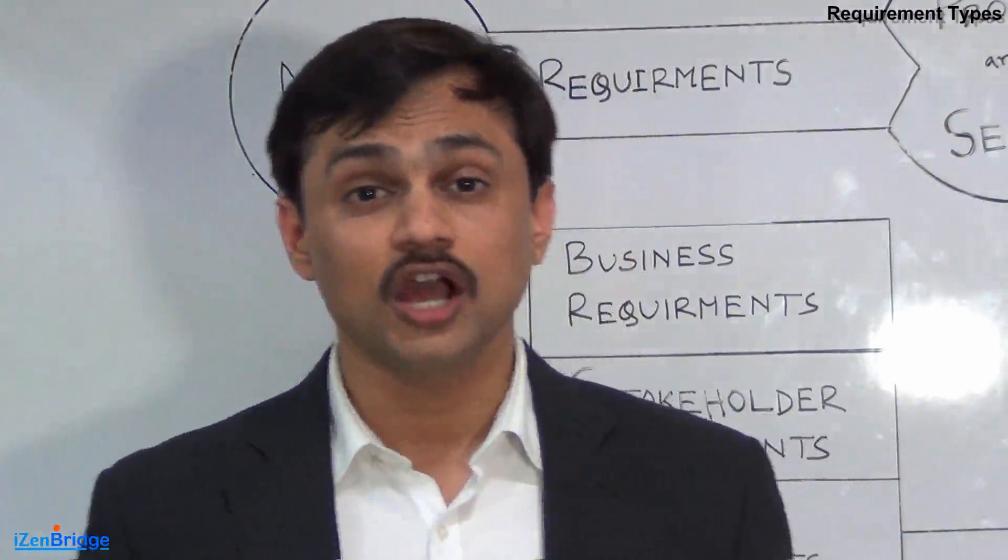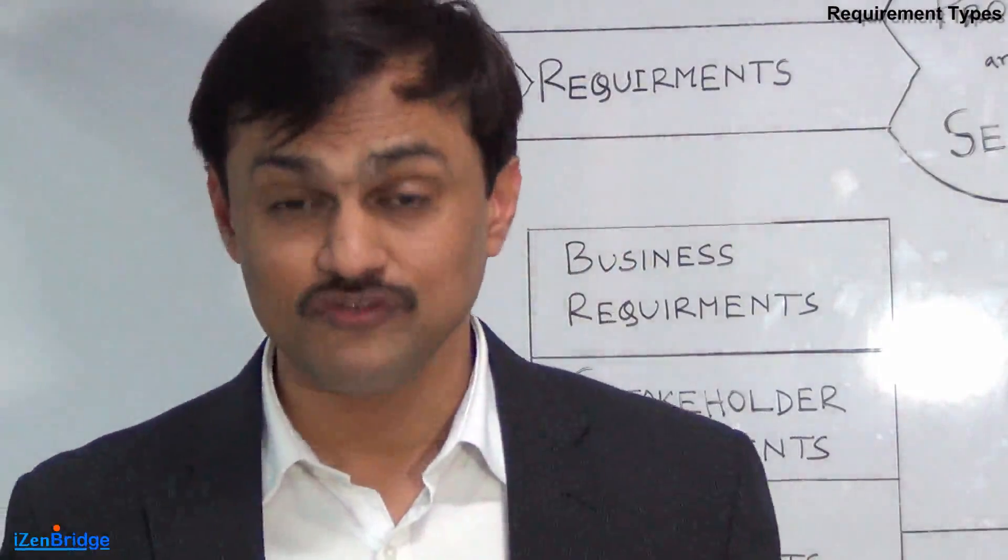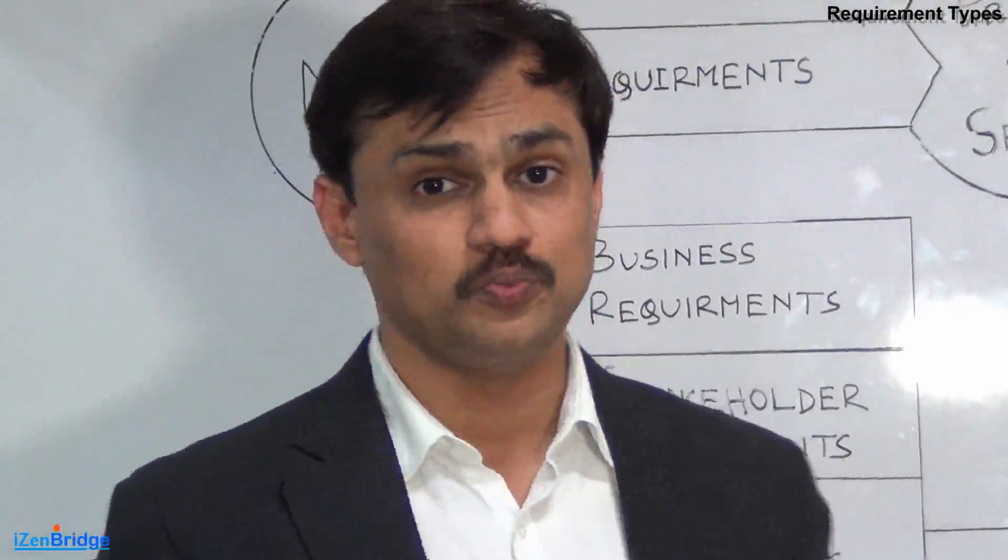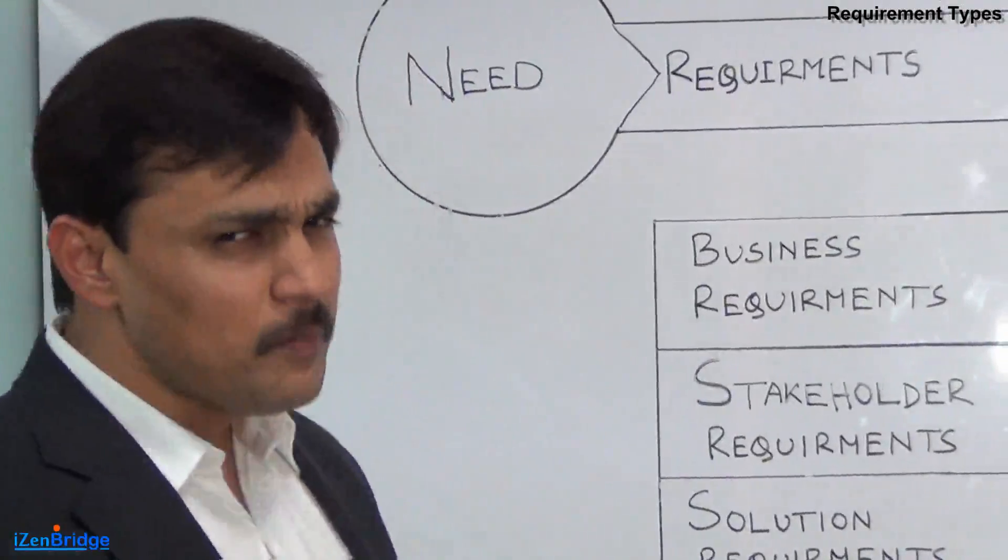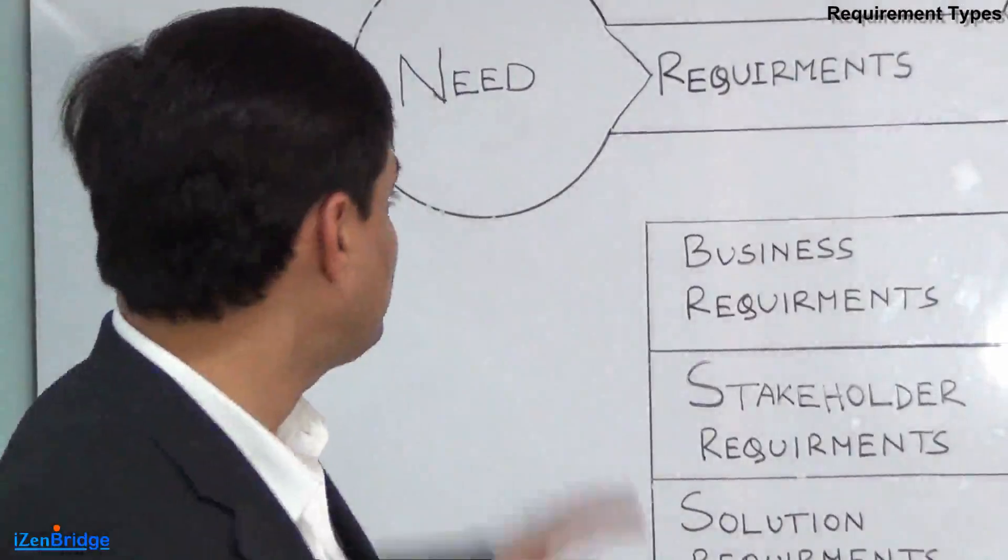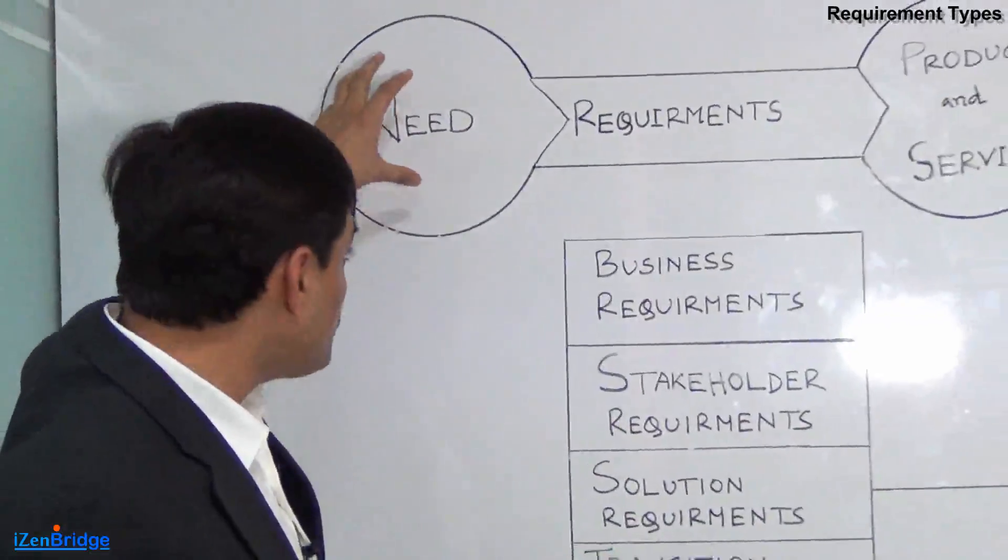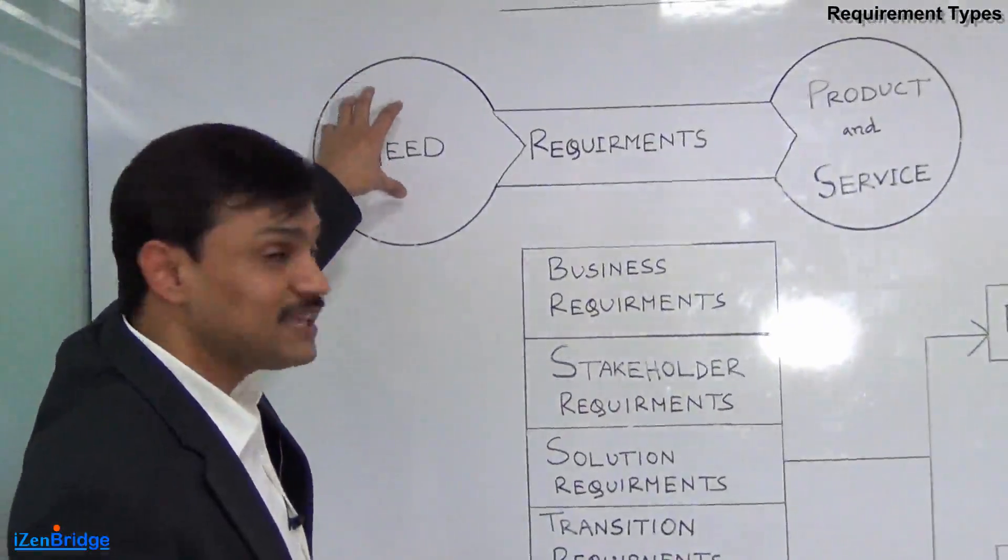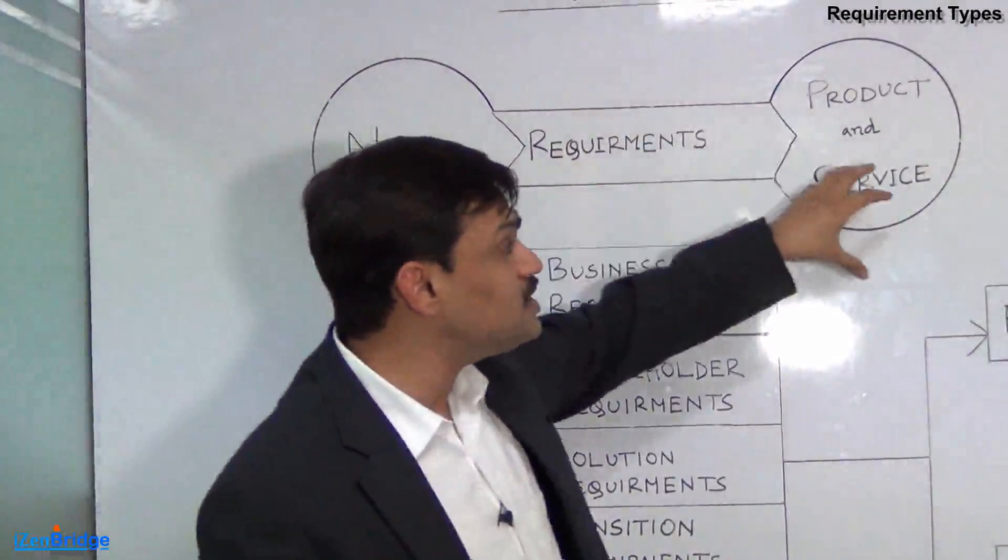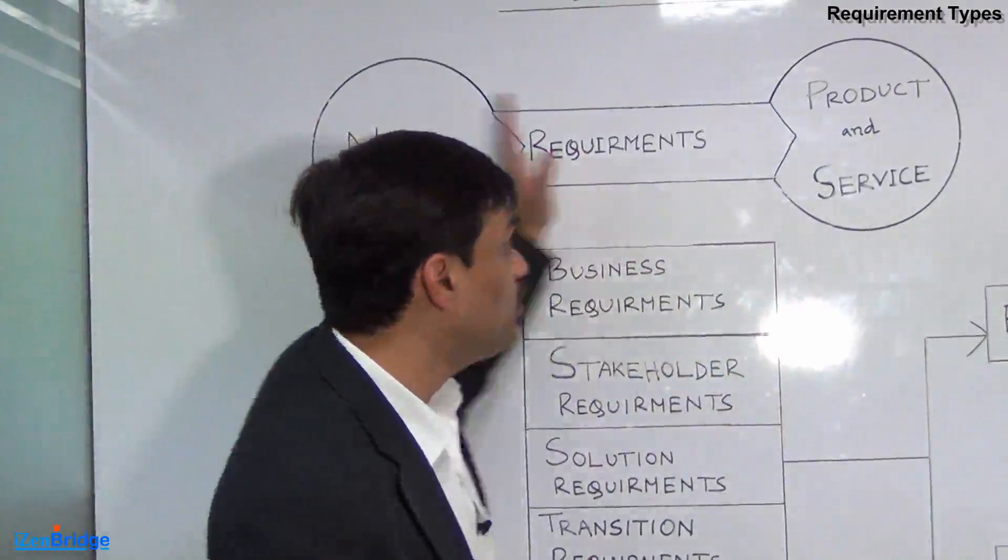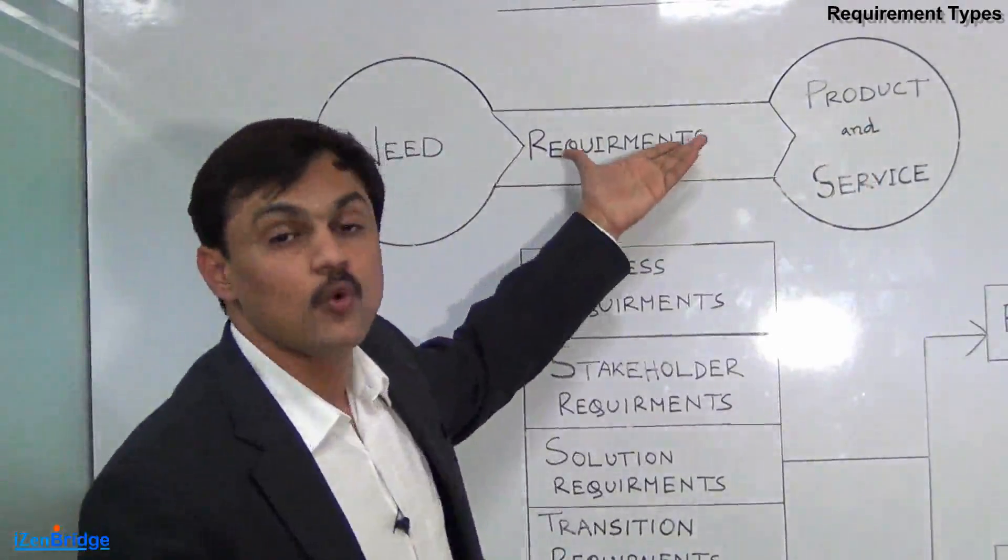PMBOK defines it as a condition or capability which must exist in a product or service in order to meet the business needs. In a broad sense, we have business needs, opportunities, problems, and in order to exploit them or make them reality, we need some conditions or capabilities to exist in our product and service. This gets communicated via requirements.